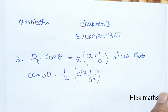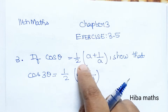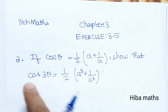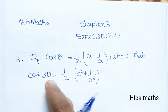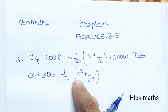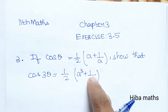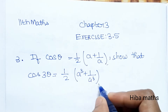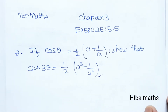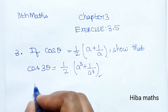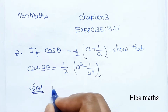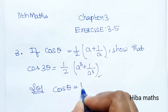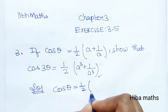If cos theta is equal to 1/2 times (A plus 1/A), show that cos 3 theta is equal to 1/2 times (A cube plus 1/A cube). We will prove that cos 3 theta is equal to 1/2 (A cube plus 1/A cube).